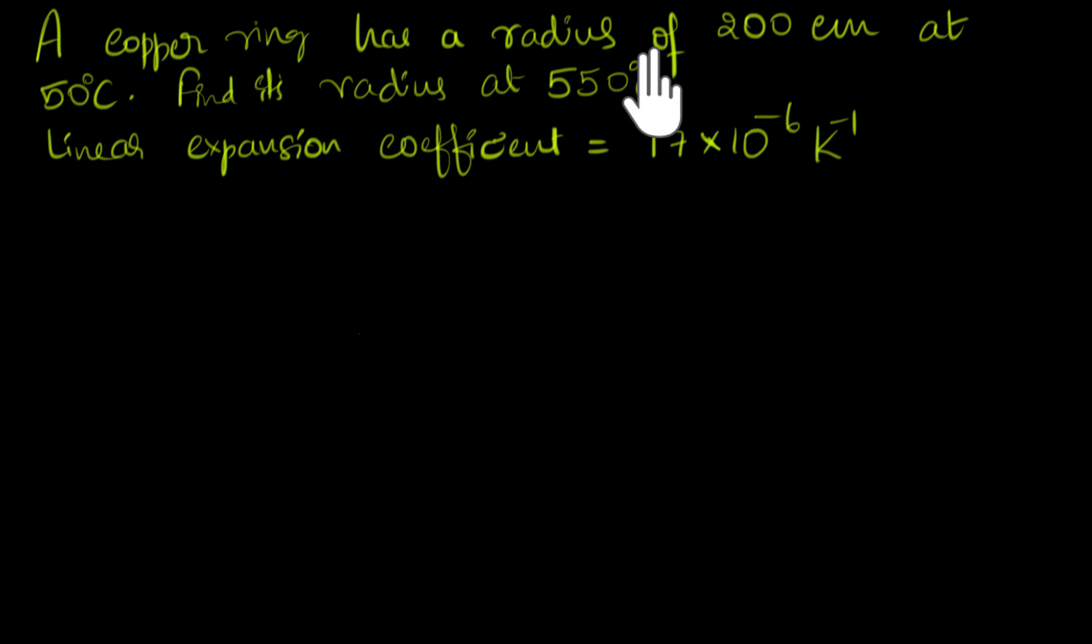A copper ring has a radius of 200 centimeters at 50 degrees Celsius. Find its radius at 550 degrees Celsius, given its linear expansion coefficient is 17 times 10 to the power minus six Kelvin inverse.